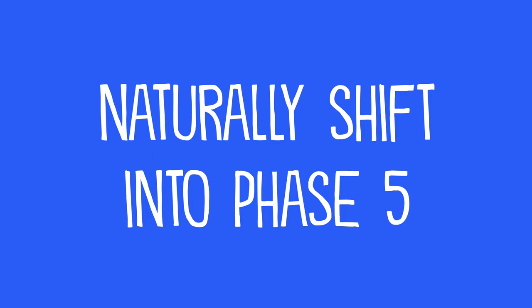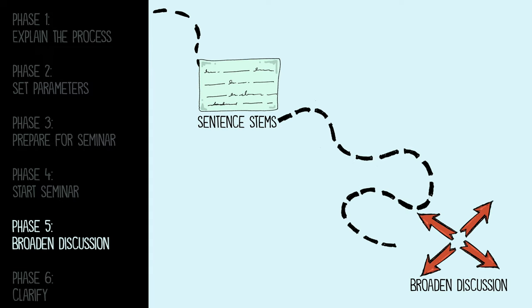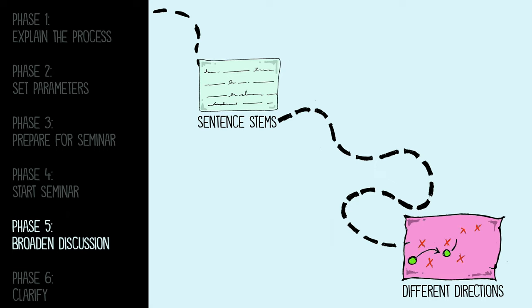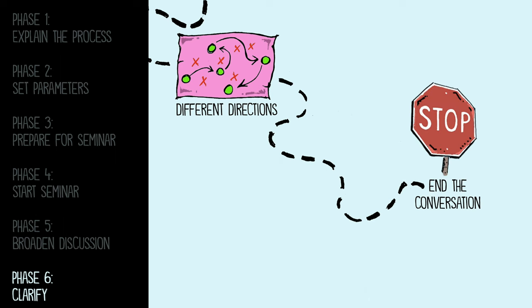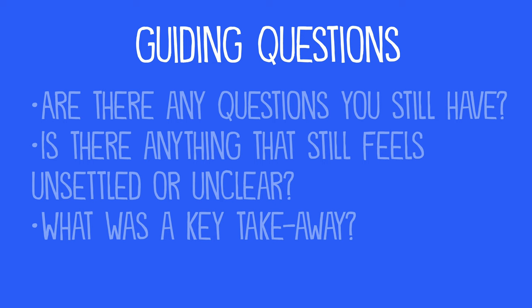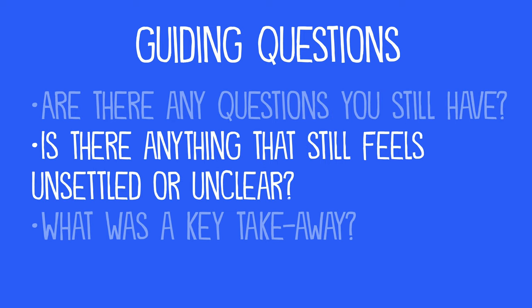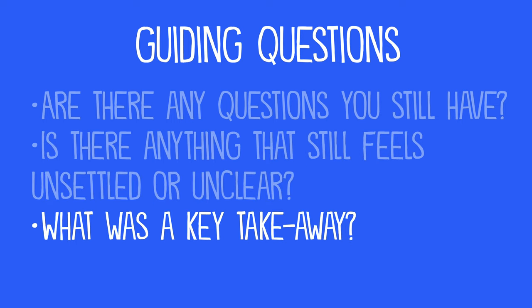Students will then naturally shift into phase five, where they broaden the discussion and take it in different directions. This is typically the longest phase in the Socratic seminar. Finally, in phase six, students clarify and close the seminar. They end the conversation, guided by questions such as: Are there any questions you still have? Is there anything that feels unsettled or unclear? What is the key takeaway?